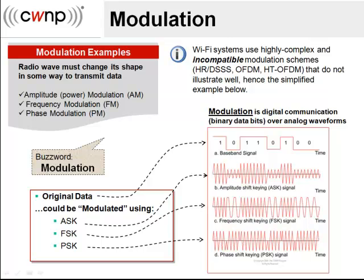Below that is frequency shift keying. The wavelength, which is directly related to frequency, becomes longer and shorter with each change in digital information — the frequency is modulated to indicate a change in digital data. Finally, at the bottom is phase shift keying, which changes the phase of a radio wave to indicate a change in data. Phase shift keying is the primary modulation method used in Wi-Fi, though amplitude shift keying is also used. These examples illustrate how modulation works: radio waves are adjusted to represent digital data.